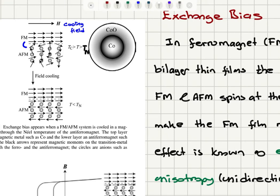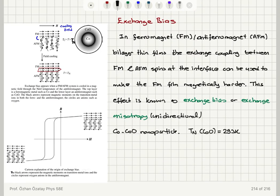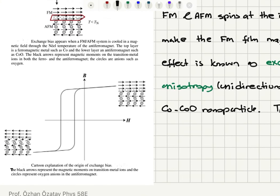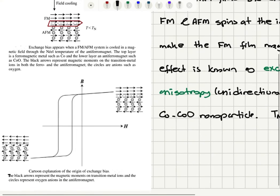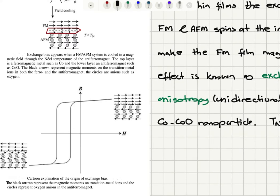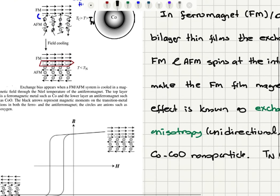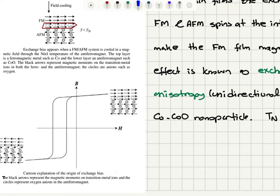Because of the exchange coupling at the interface, the spins at the interface will be coupled. As a result, if we cool down below the Néel temperature in the presence of the field, we obtain a specific spin structure. Then, if we take a hysteresis loop of this structure, we see a shift in the hysteresis loop that is opposite in direction to the field cooling direction.